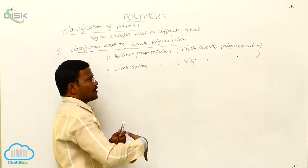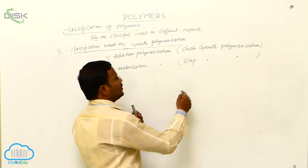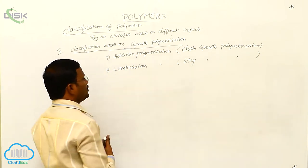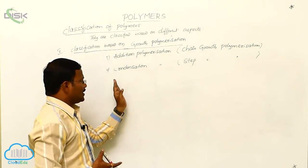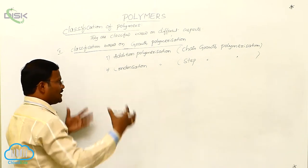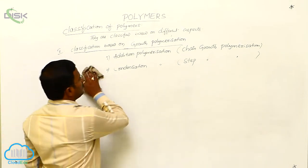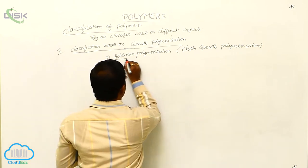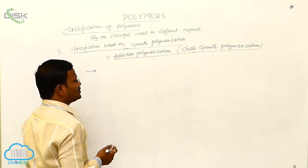When monomers — same or different types — react in large scale, the polymer chain either grows continuously during the polymerization or grows in a stepwise manner. During addition polymerization, chain growth takes place; during condensation polymerization, step growth takes place, meaning the size increases step by step.